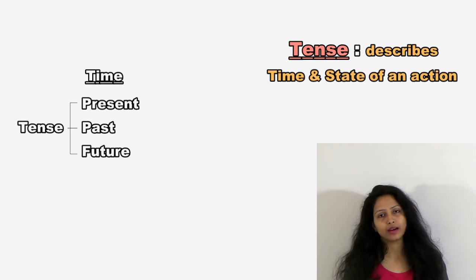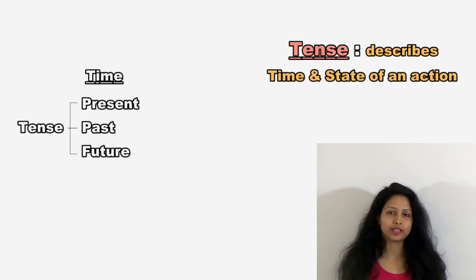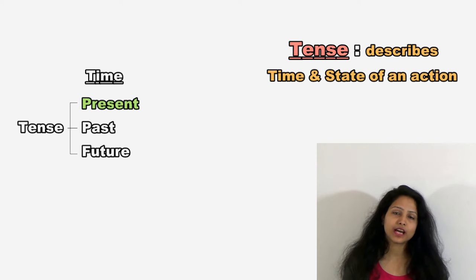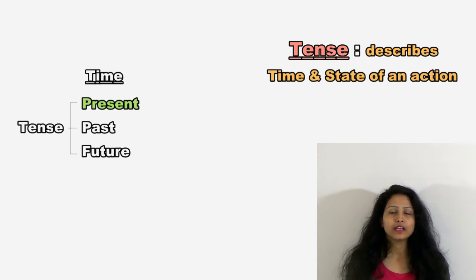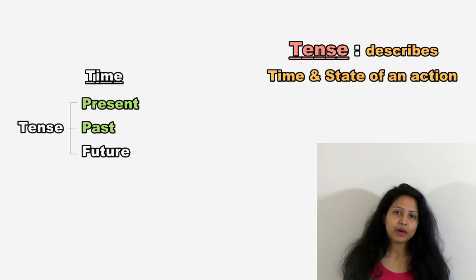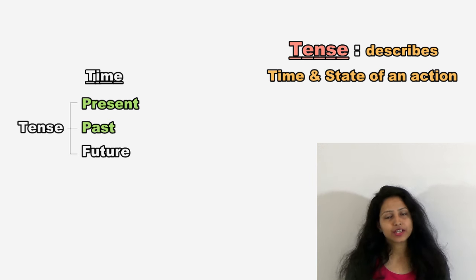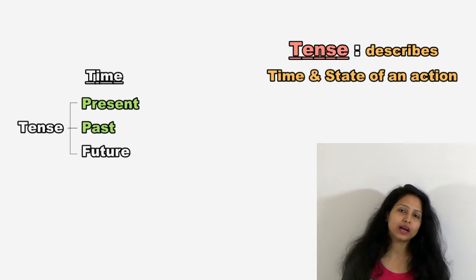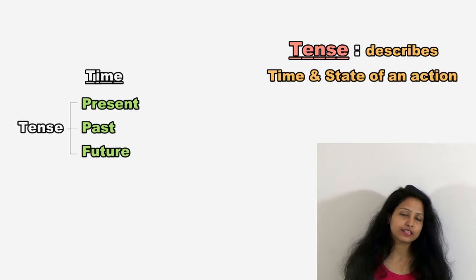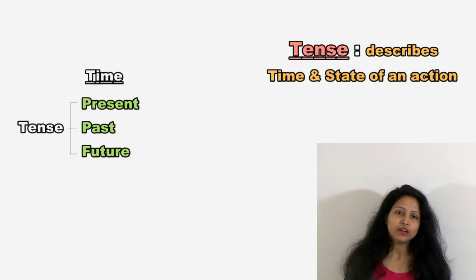Kari ke samay ke anusar tense ke ye teen forms hain. Present tense describes an action in the present time. Present tense vartman samay ke action ko represent karta hai. Past tense describes an action in the past time. Past tense kisi ho chuke kari ko represent karta hai. Future tense describes an action in the future time. Future tense future ke honay wale action ko represent karta hai.